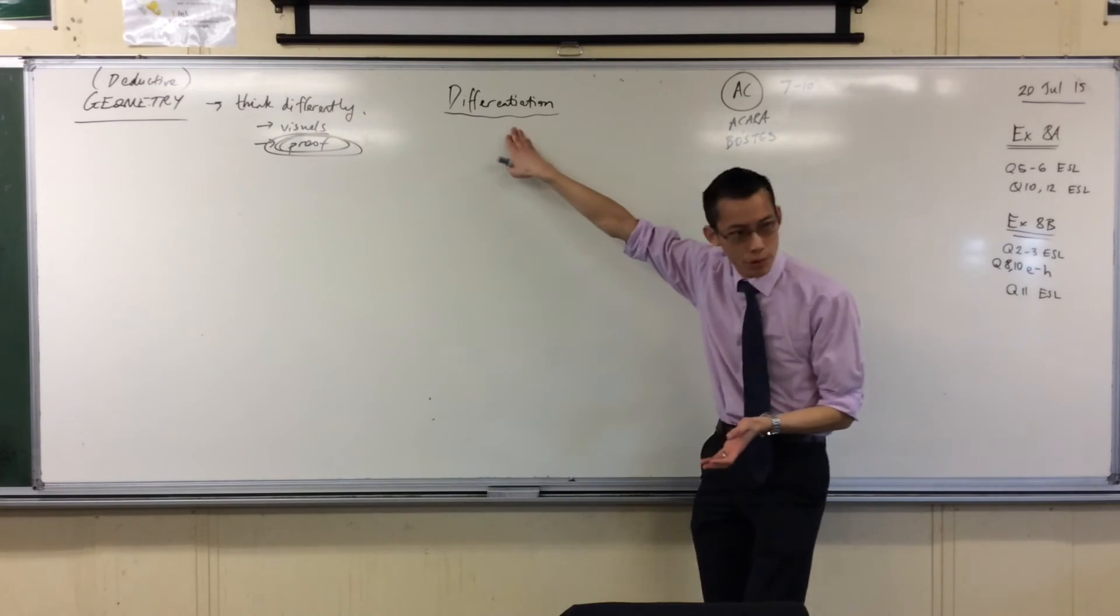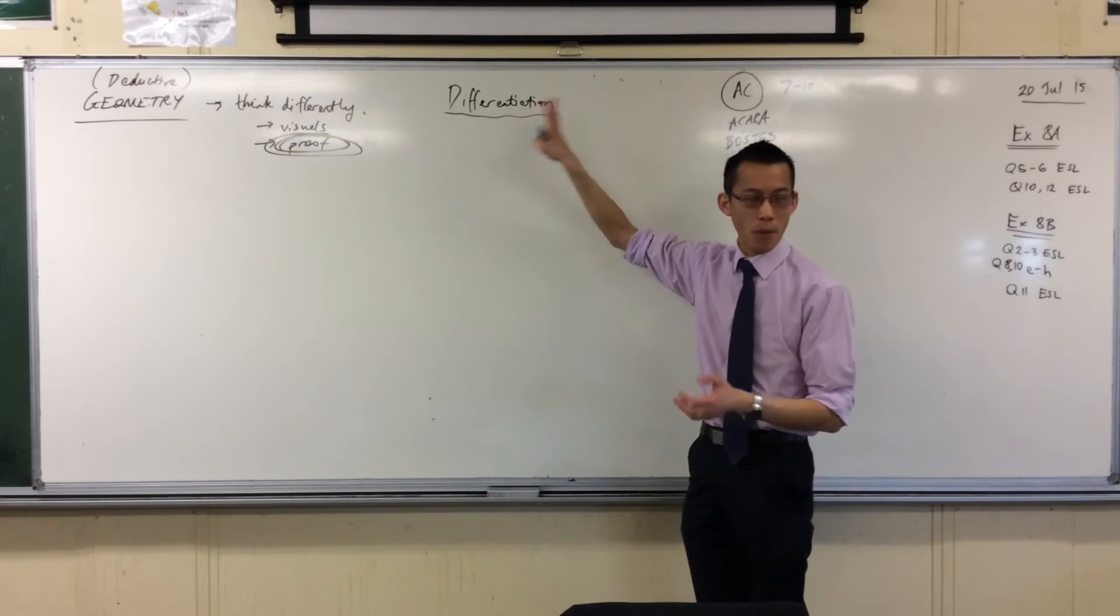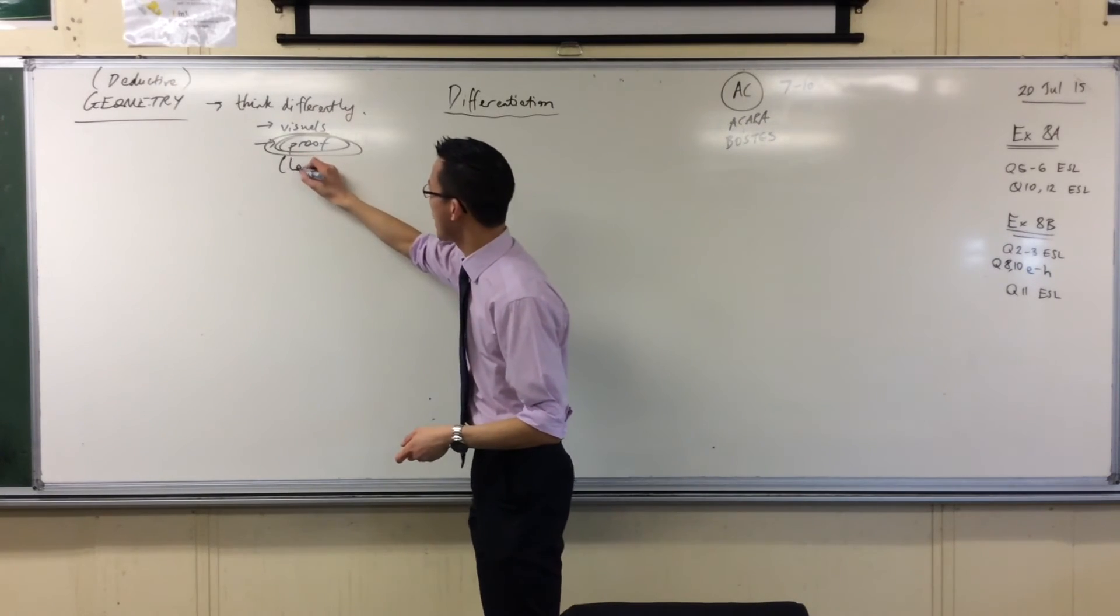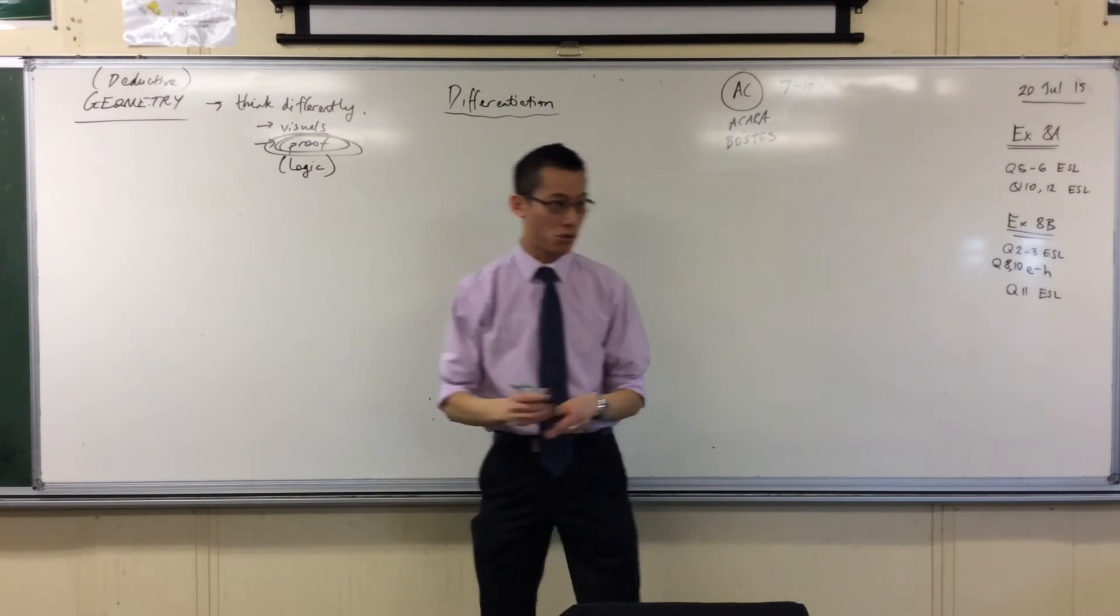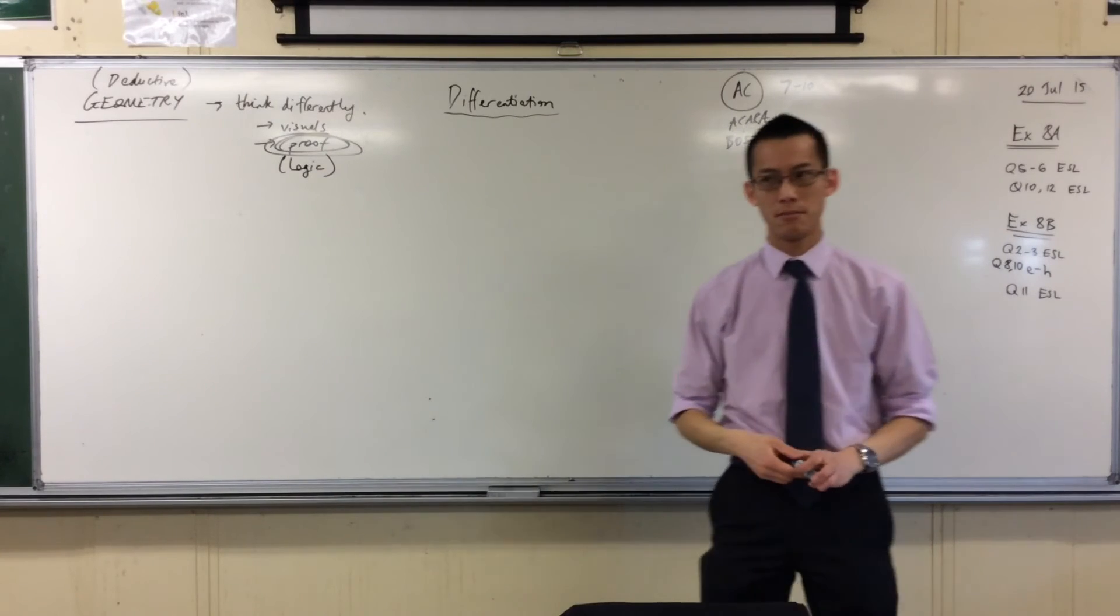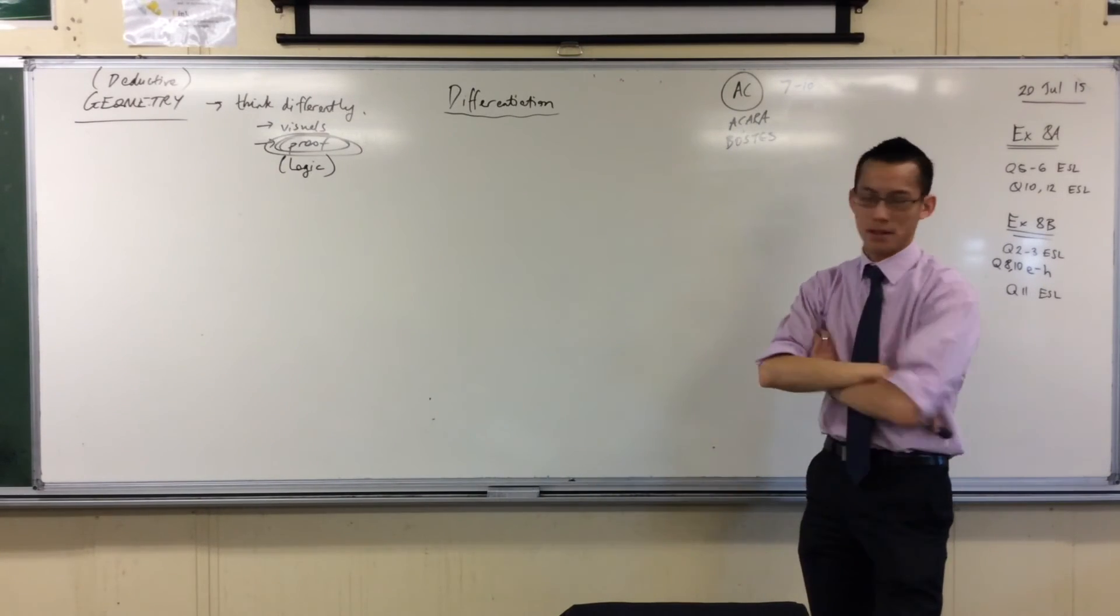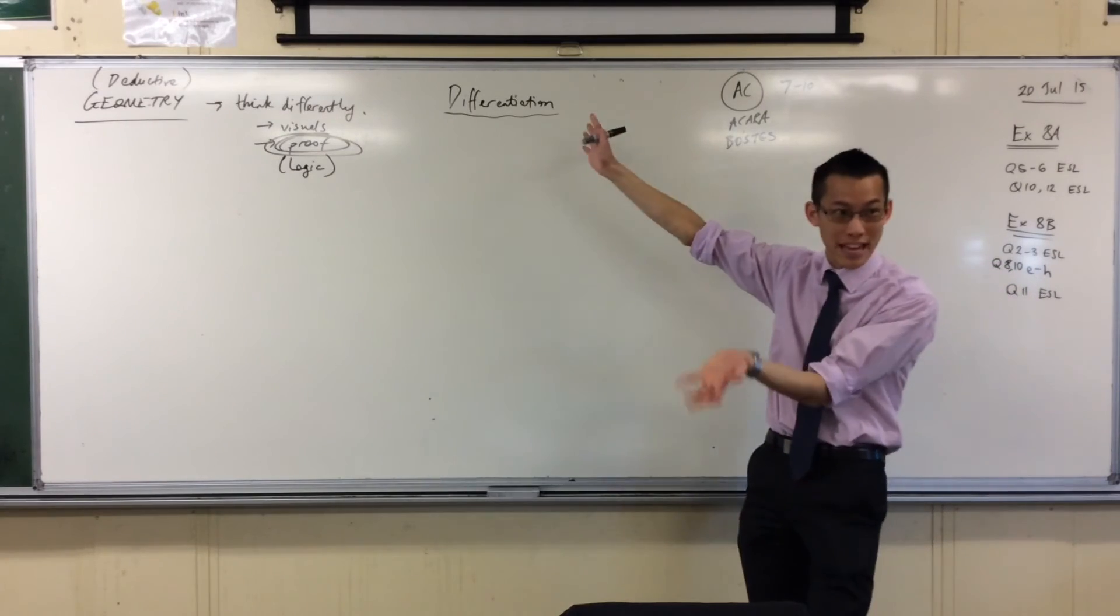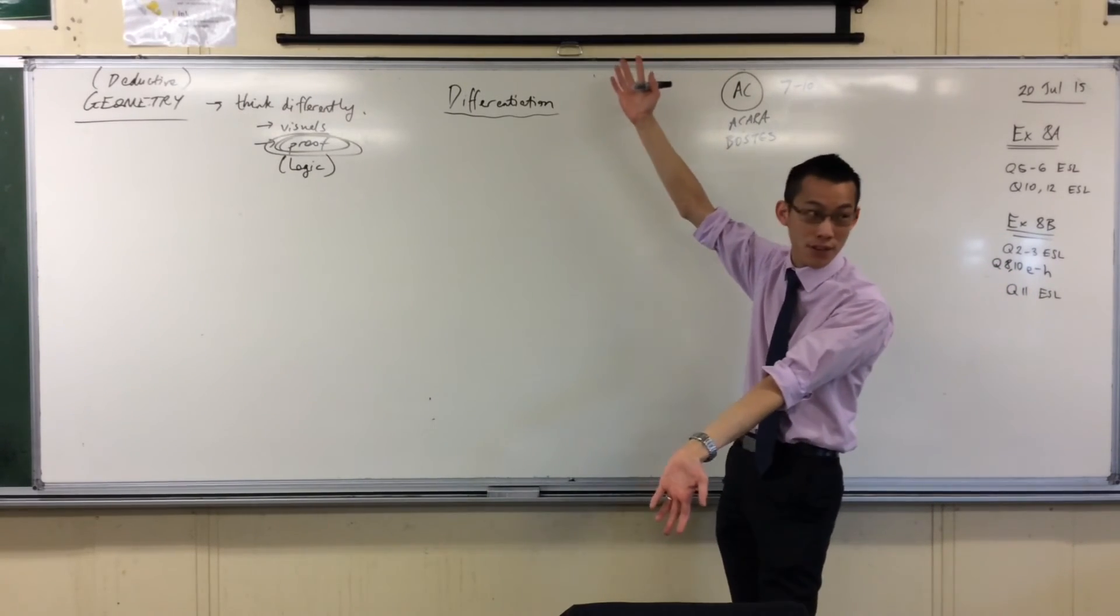We prove things in differentiation, but where proof was developed as an idea, and where mathematical logic really matured was in geometry, was in geometry. So the Greek mathematician Euclid, right, who this field is named after, Euclidean geometry, if you've heard that phrase before?